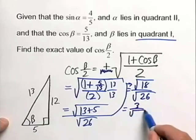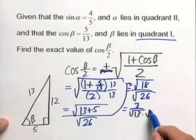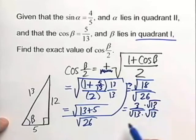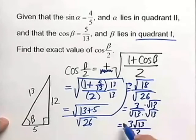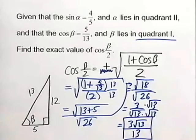you end up with 3/√13. Once we rationalize, multiplying top and bottom by √13, we end up with 3√13/13. And there is our exact rationalized answer.